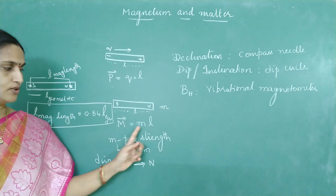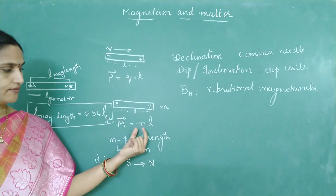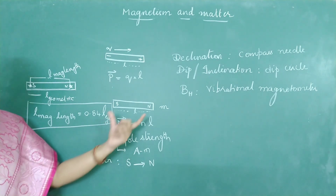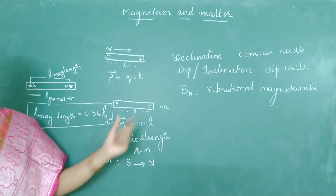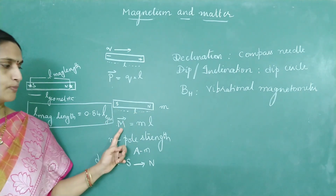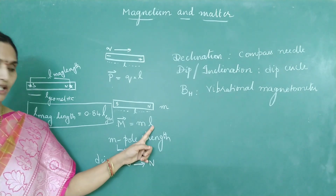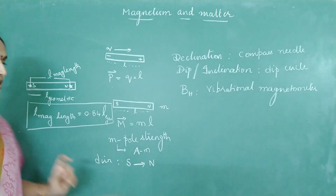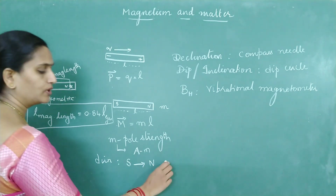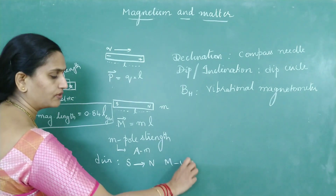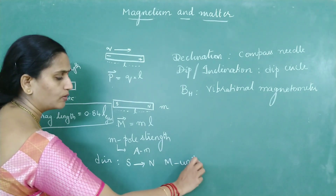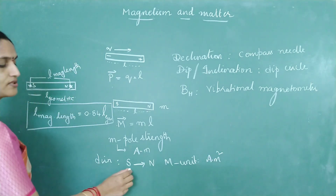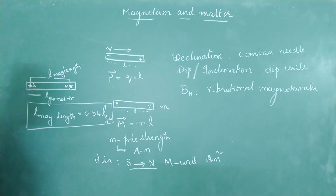Magnetic length is 0.84 times the geometric length. So when defining the magnetic moment, it should actually be the magnetic length, but we generally ignore the small change and take it as the length of the magnet. M is equal to small m into L, where small m is called the pole strength. The magnetic moment is the product of pole strength into L. Pole strength has a unit ampere meter, so magnetic moment has a unit of ampere into meter square. It is directed from south to north.